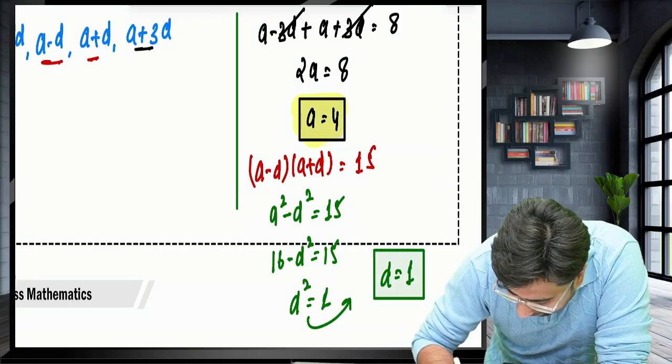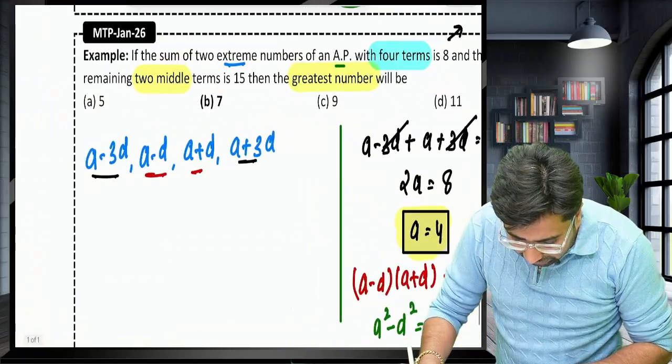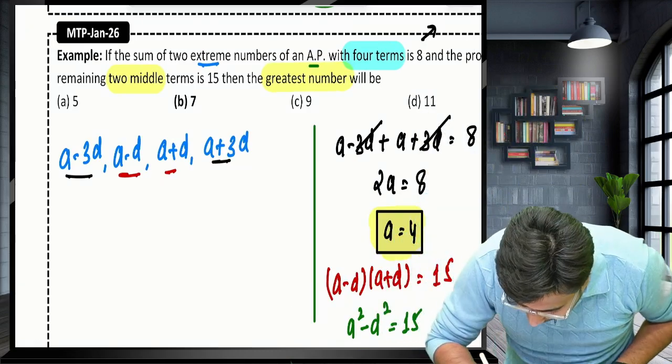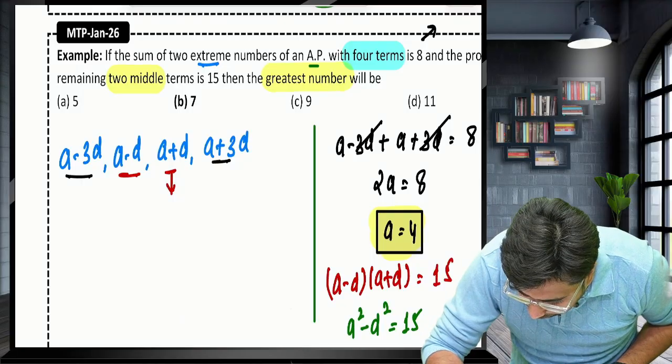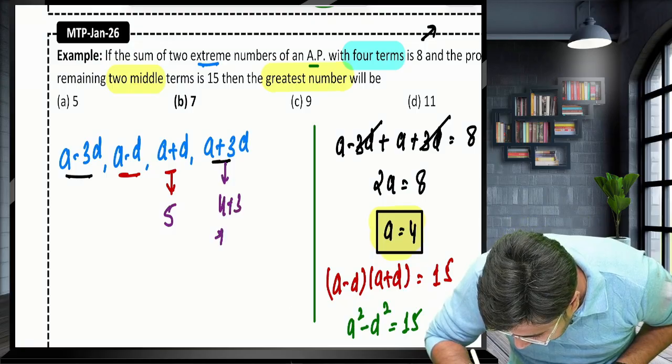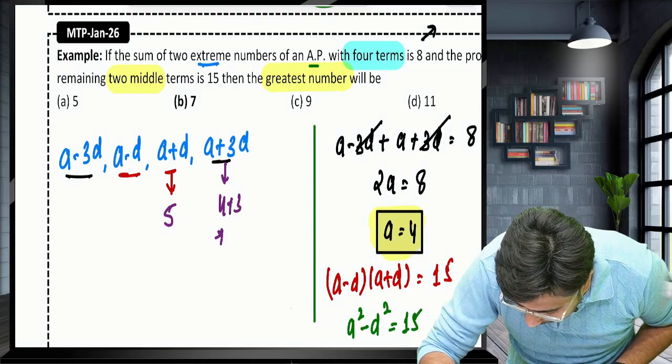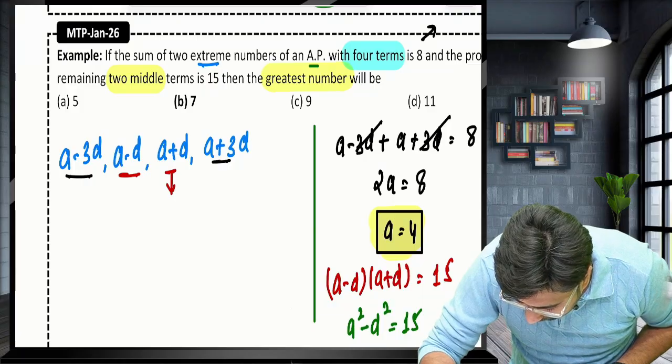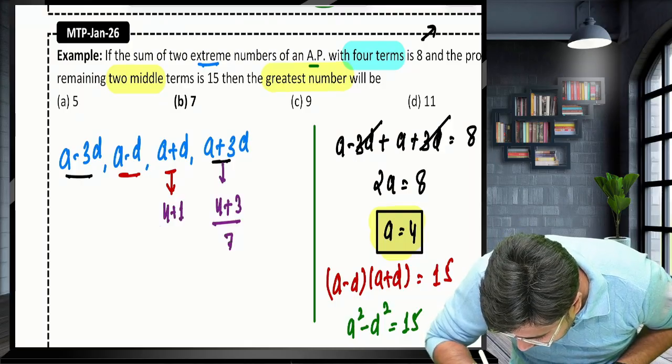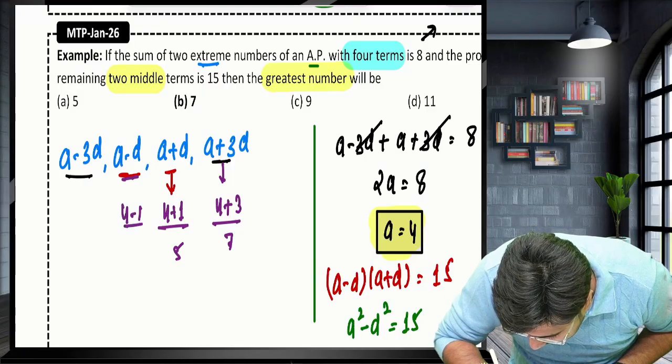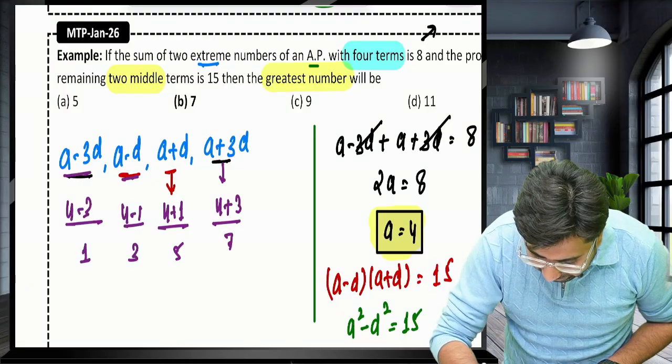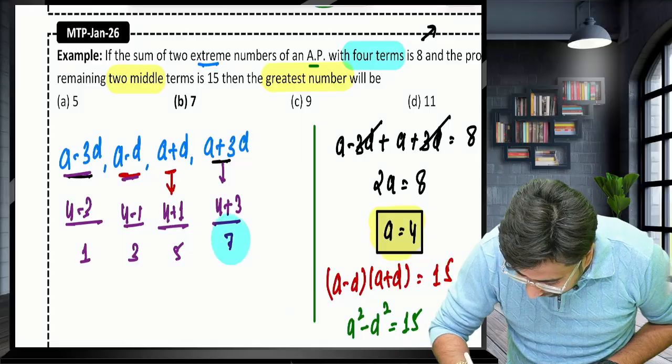Now we have A, D is also there. Now you can form entire series. They are asking the greatest number. A is 4, D is 1. Let's put over here. 4 plus 1 is 5, 4 plus 3 is 7, 4 minus 1 is 3, 4 minus 3 is 1. Since they are asking the greatest number, so the greatest number is 7.